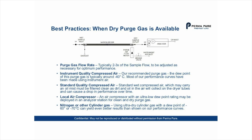You also have the option of deploying a local air compressor. An air compressor with an ultra-low dew point rating may be deployed in an analyzer station for clean and dry purge gas. Many customers use nitrogen or other cylinder gases like argon — sometimes these are carrier gases used in combustion-style analyzers that are then run back as purge gas because it's very cost effective. Using ultra-dry cylinder gas with a dew point of minus 60 or minus 70 can yield even better results than shown on our performance curves, but it is pricey.